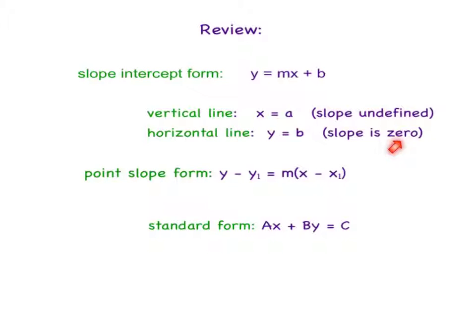We also have practiced point-slope form, where y minus y sub 1 equals m times x minus x sub 1. Where x sub 1 and y sub 1 is a point on the line, m is the slope, so these three will have numbers, x and y stays the same.